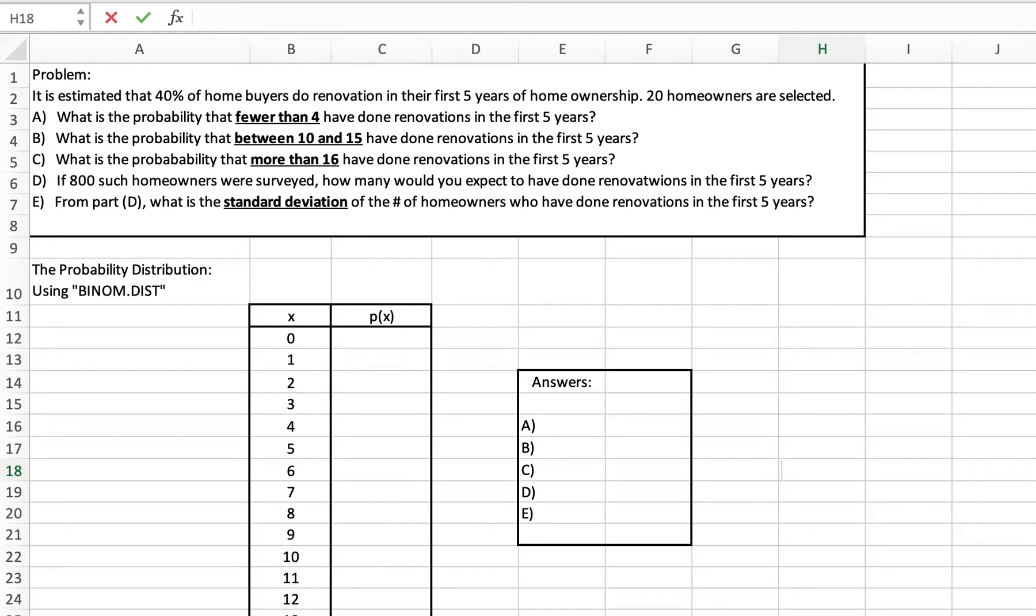Let's look at an application of the binomial distribution and learning how to use the different functions in Excel. With the binomial distribution, we're looking for a specific number of successes out of a specific number of trials. Another thing about each trial is that the probability of a success is the same on each trial, and each trial only has two outcomes, like a yes or no situation.